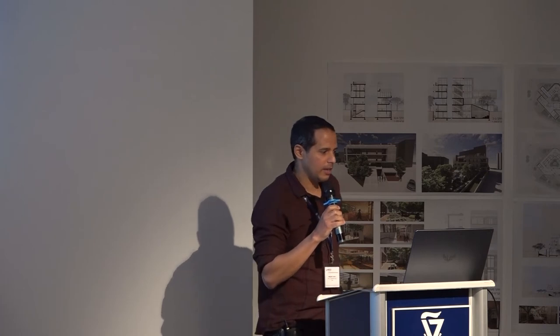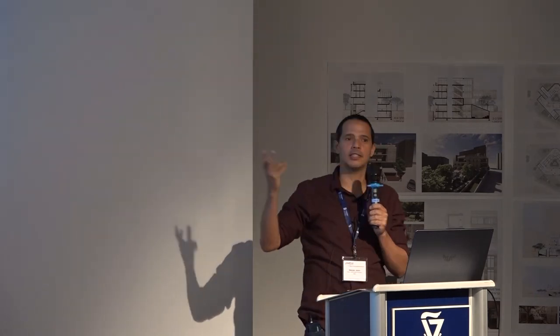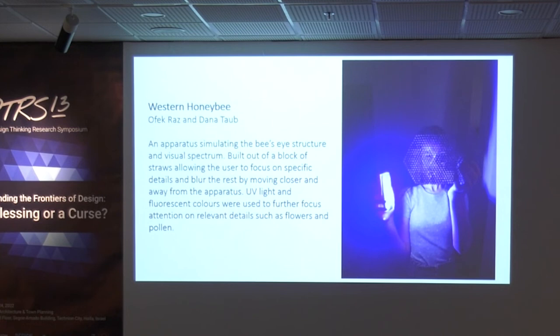The first project, by Ofek and Dana, was an apparatus simulating the bee's eye structure and visual spectrum. They created a block made of straws that, when moved closer or farther from your eye, brings different things into focus — similar to the compound eye structure of bees. Bees also have ultraviolet vision, which shows them what to focus on. The pollen they seek is usually luminescent in ultraviolet. They created a simulation using fluorescent colors under ultraviolet light combined with this apparatus.